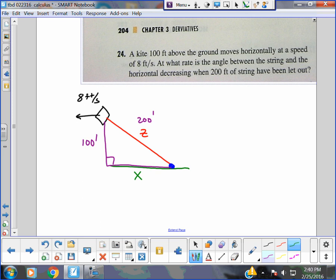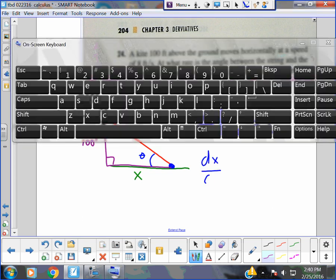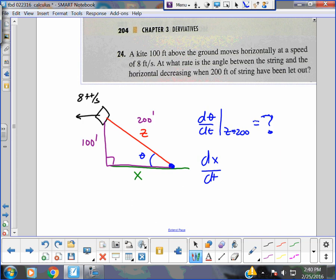And I think I'm going to have to call this on the ground X. You guys agree? Because as this kite moves, X and Z change. It says at what rate is the angle between the string and the ground. So I'm going to call that angle theta. You want to know at what rate is theta decreasing as a kite moves away. So I think I got dθ/dt when Z equals 200. It's question mark. So what do we know? We know one thing. We know dx/dt. dx/dt is positive 8 feet per second, right? The string is being let out.